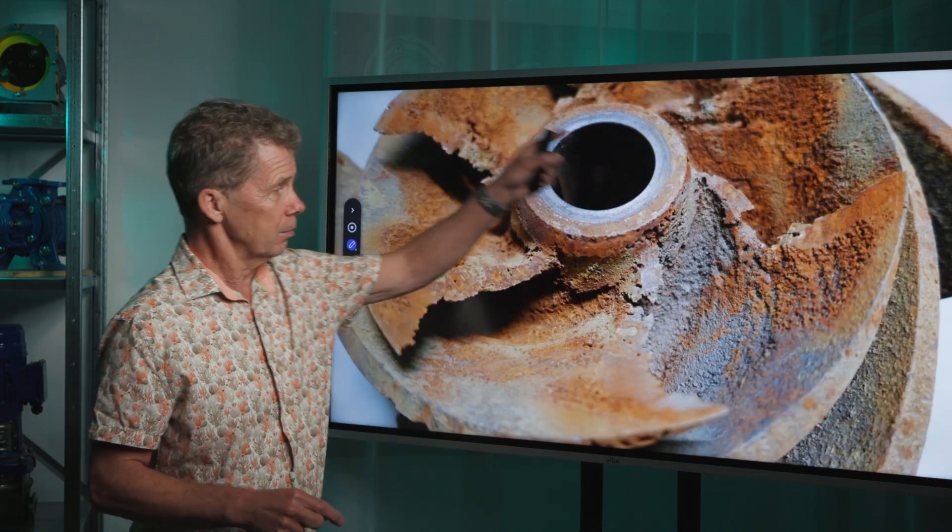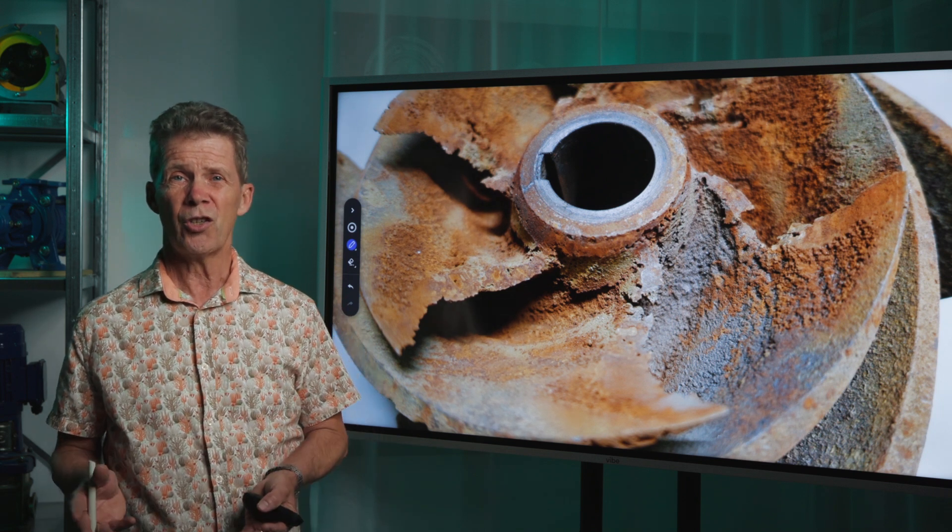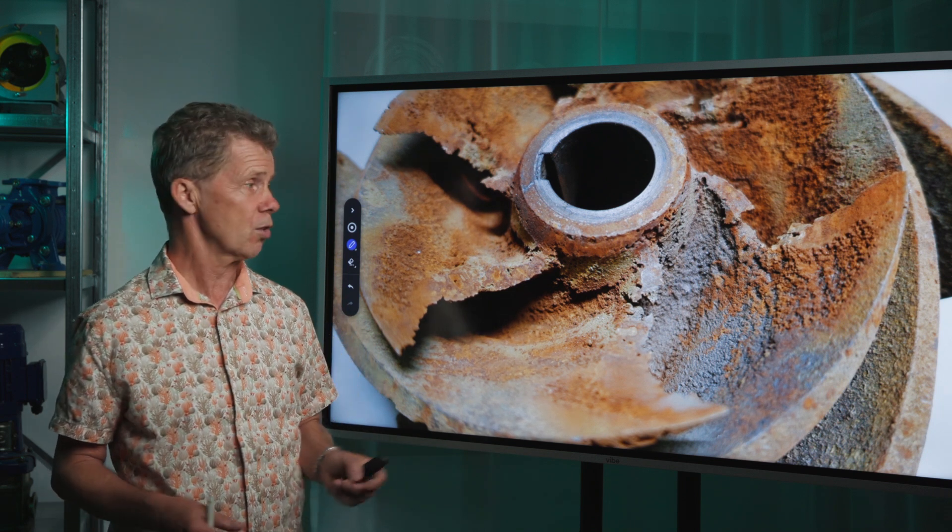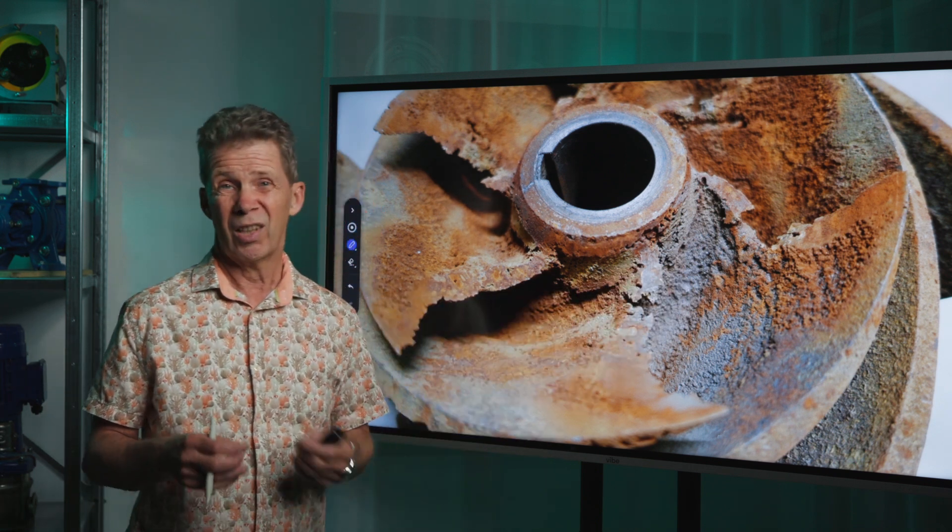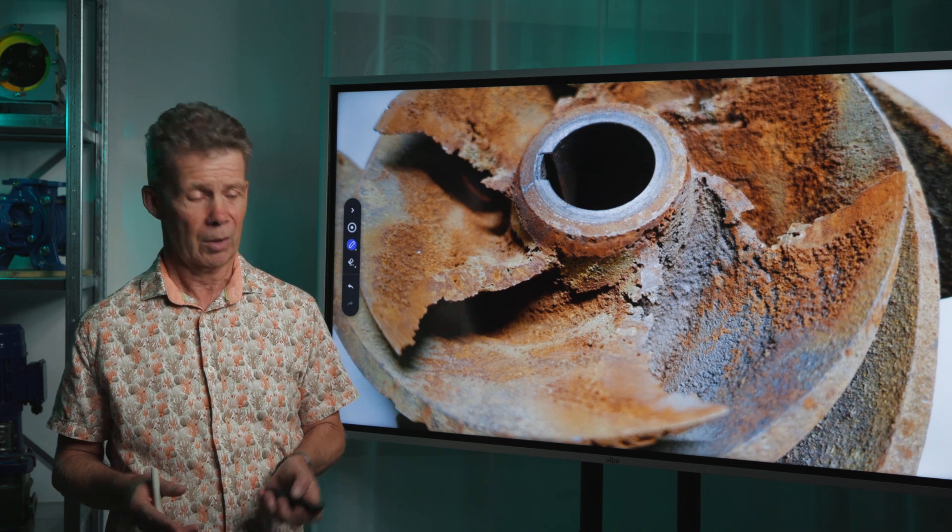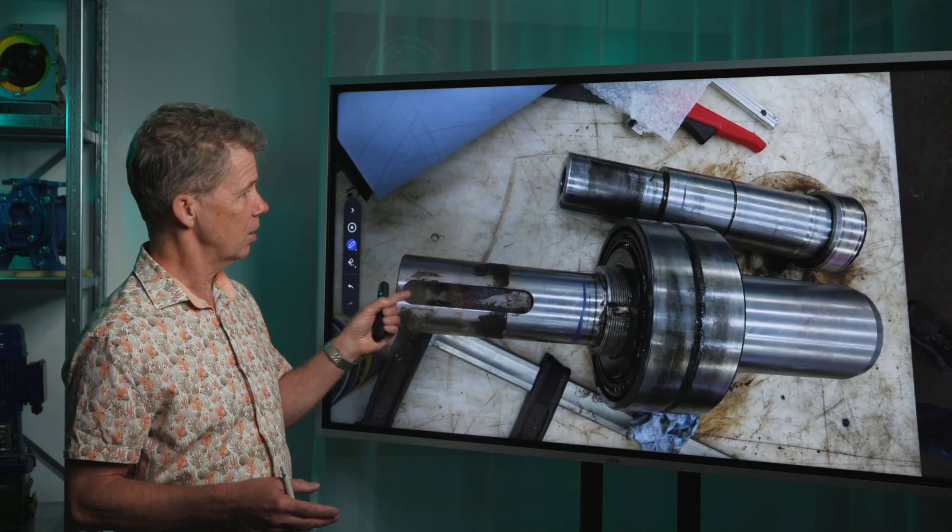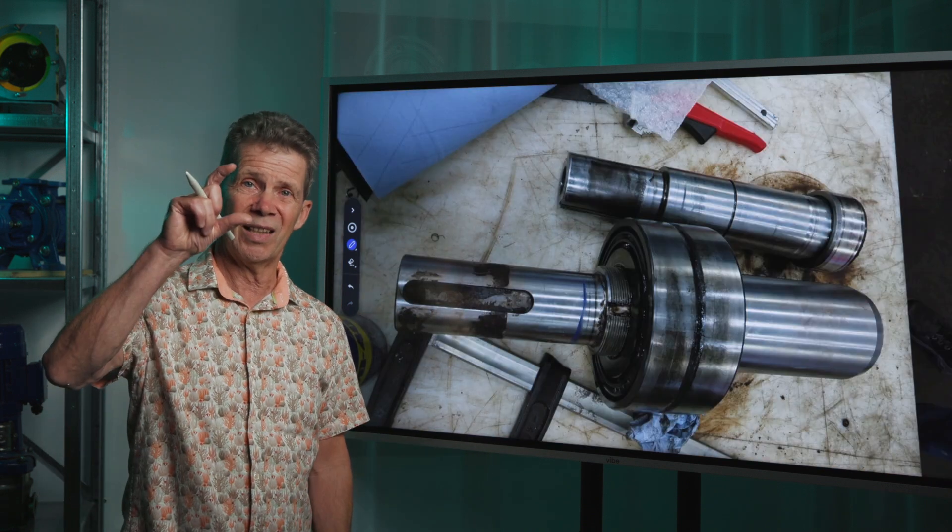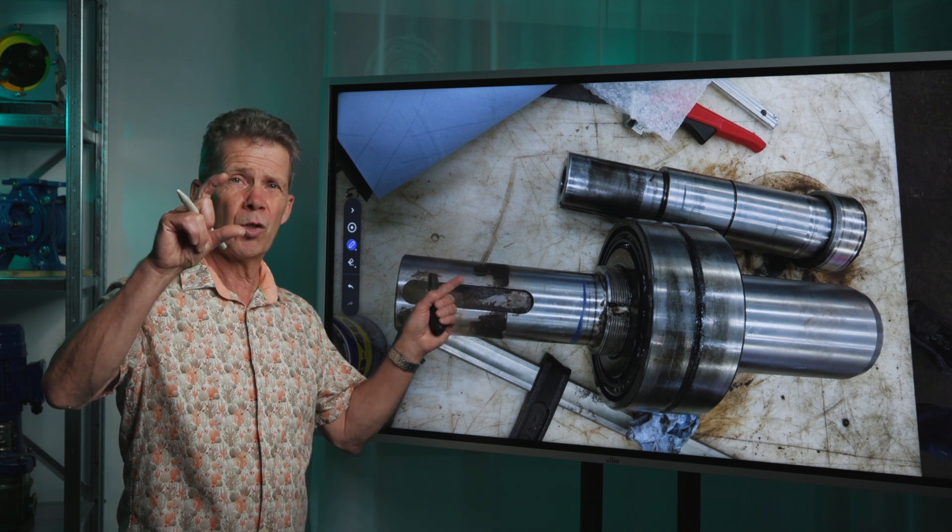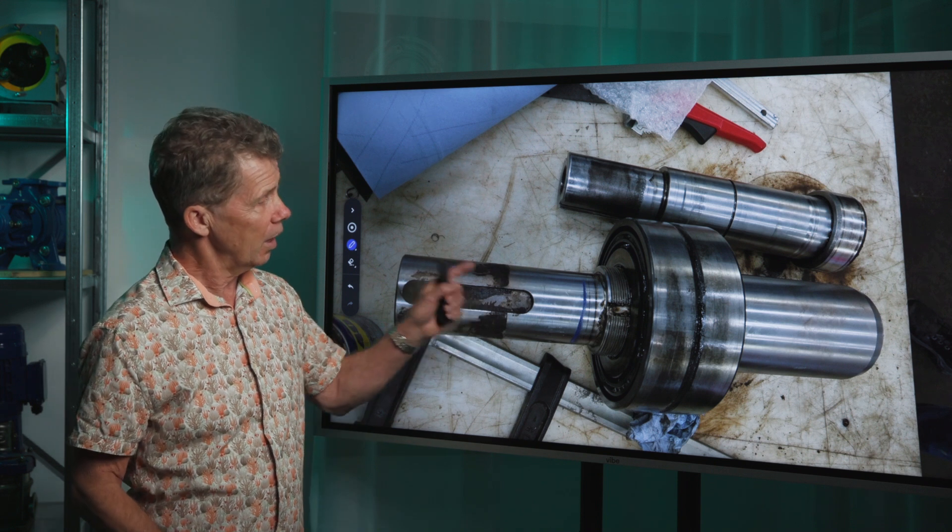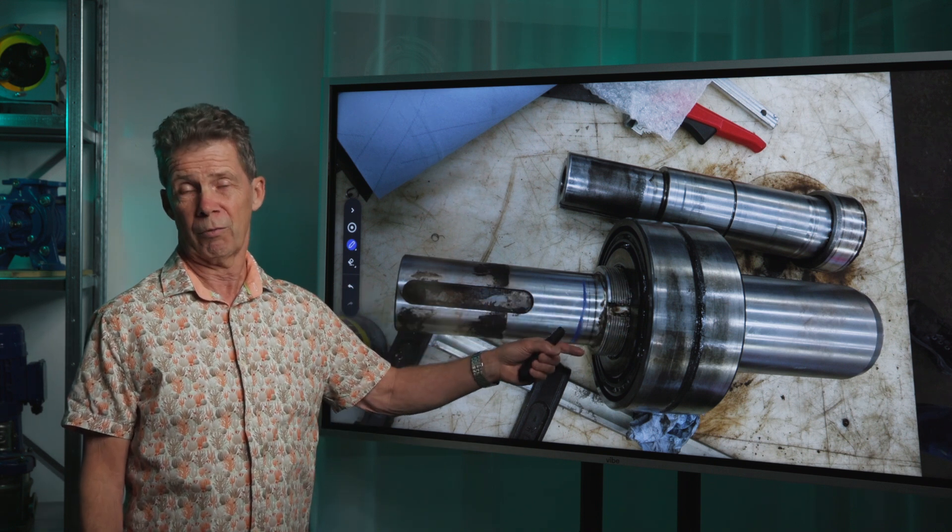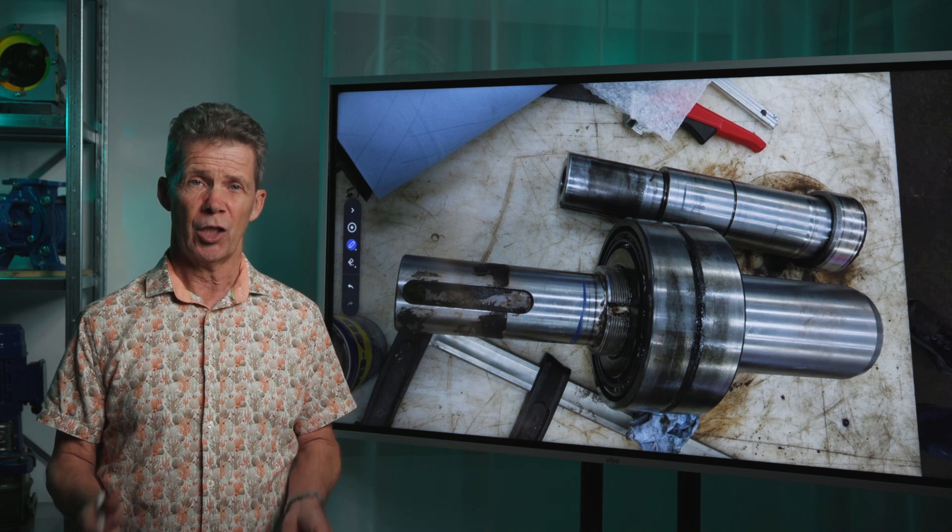This impeller has an operation time of six months and here you see clearly the holes of cavitation damage. But also here this shaft has a diameter like this. This pump was only in operation for six months and here the weakest part was the pump shaft. So cavitation forces are very high. But why do we get cavitation?